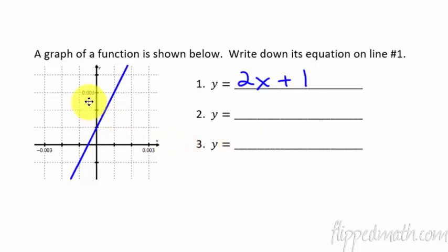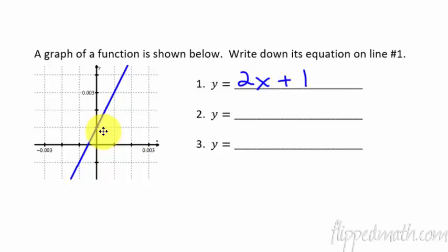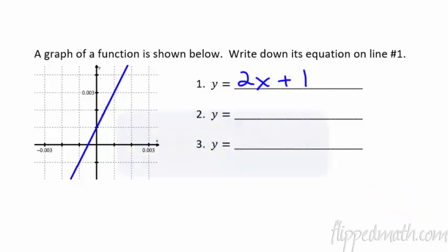So 0.003 — what does that mean? Every single line is 0.001. Knowing that, why don't you come up with an equation for number two. Now what do you think the equation of this thing is? Put that down on number two. Pause now.